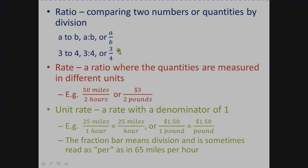A rate is a ratio where the quantities are measured in different units. Instead of just numbers, you might have a unit like miles divided by hours. For example, 50 miles over two hours, or three dollars divided by two pounds, or 500 words in 10 minutes — those are all rates.